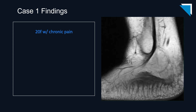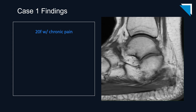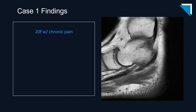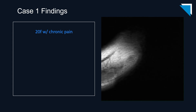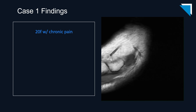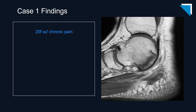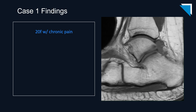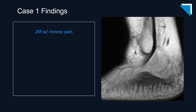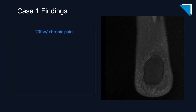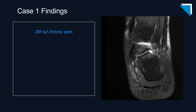Here are the corresponding images from the non-fat saturated T1-weighted sequence. Remember, these are good images for fractures and for the T1 hypointensity that is characteristic of acute osteomyelitis. And here is the coronal fluid-sensitive sequence.